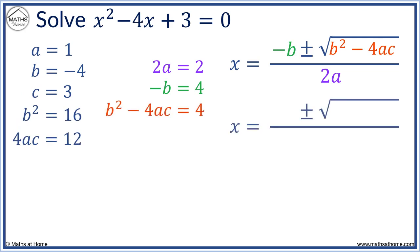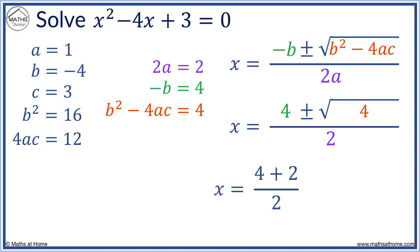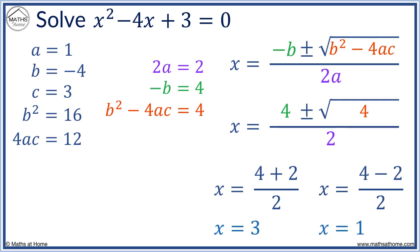We can now substitute these values into the quadratic formula. Minus b equals 4, the discriminant b squared minus 4ac equals 4, and 2a equals 2. The square root of 4 is 2, so the equation simplifies to 4 plus 2 over 2, and 4 minus 2 over 2. Working these out: 4 plus 2 equals 6, and 6 divided by 2 equals 3. 4 minus 2 equals 2, and 2 divided by 2 equals 1.